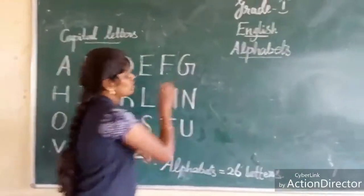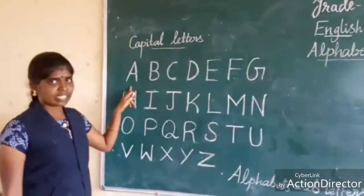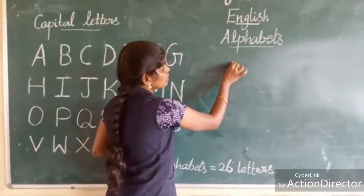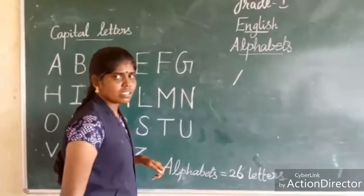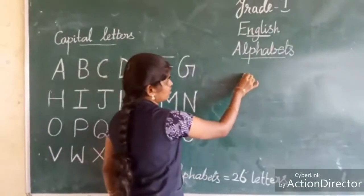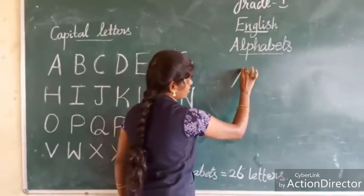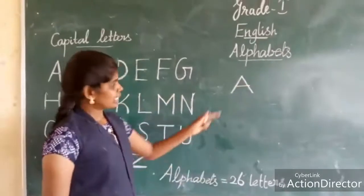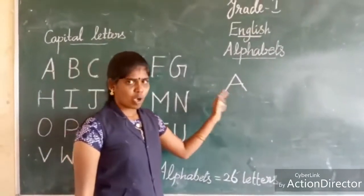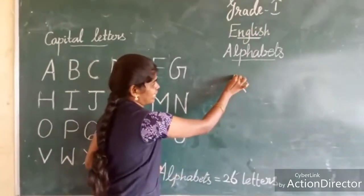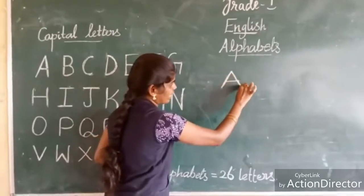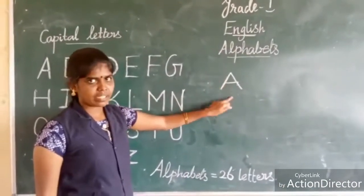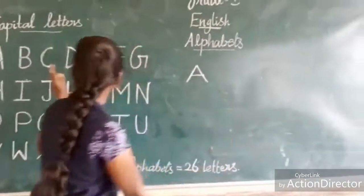What is the first letter? This is A. How to write A? This is a slanting line. First, one slanting line. Next, another slanting line. One sleeping line. This is A. First one slanting line, this side one slanting line, next one sleeping line. This is capital letter A.